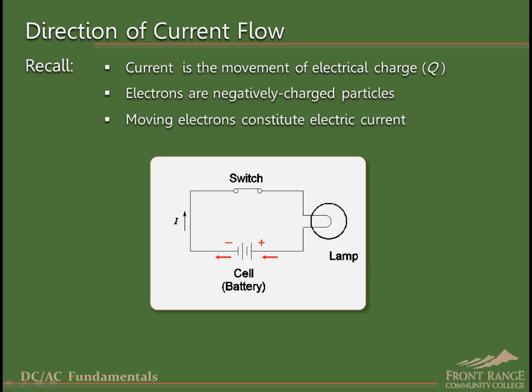In this course, we will use electron current flow, as shown here. By convention, physicists and engineers generally consider current to flow in the opposite direction, which is called conventional current flow.